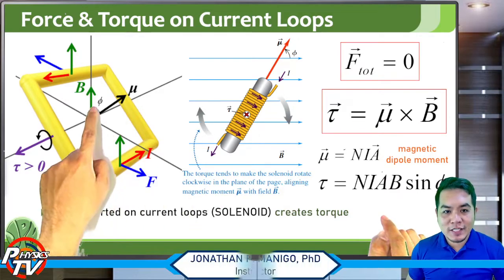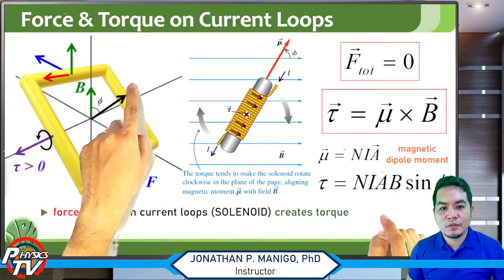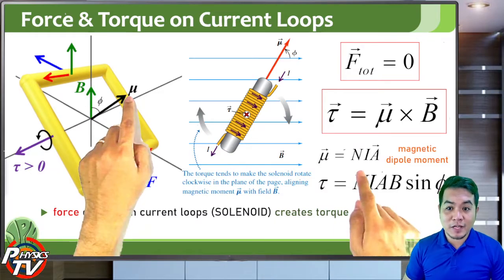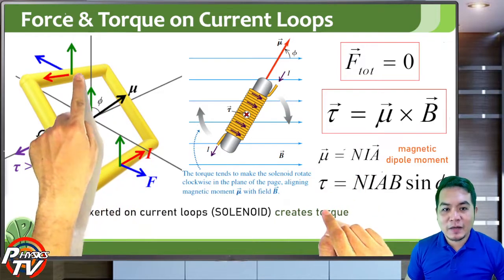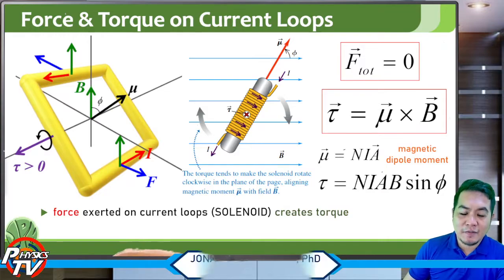So the magnitude of the torque is NIAB sine φ, where φ is the angle between the magnetic dipole moment vector μ and the magnetic field B.